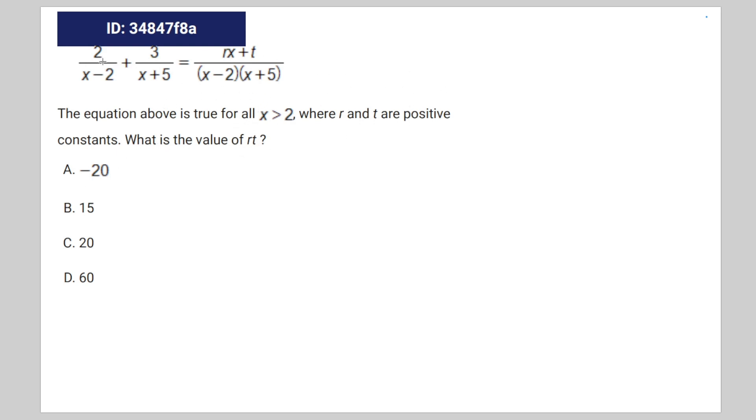We're going to get a common denominator by multiplying the numerator by a corresponding factor of this equation. So that's going to look something like: rx plus t over x minus 2 times x plus 5.